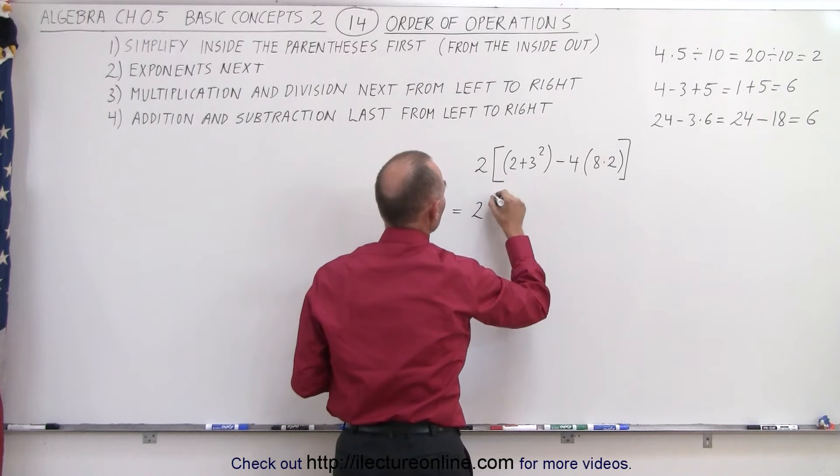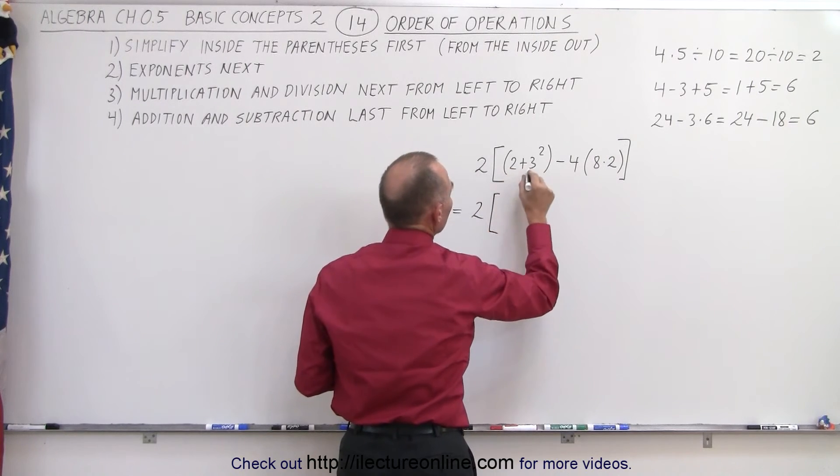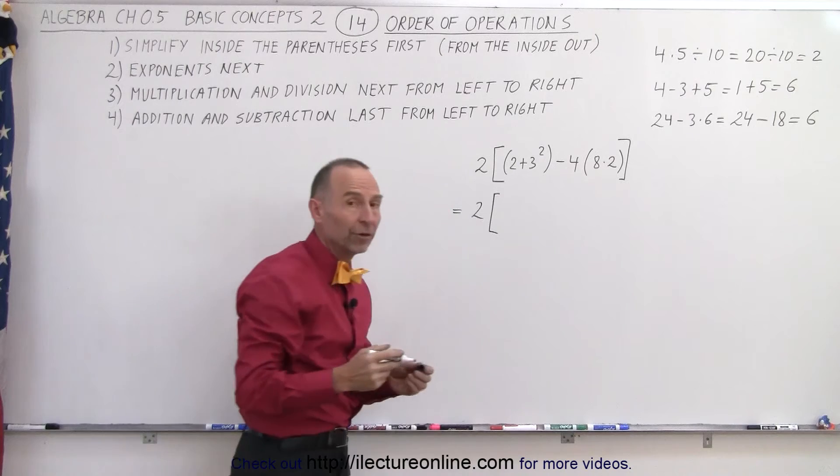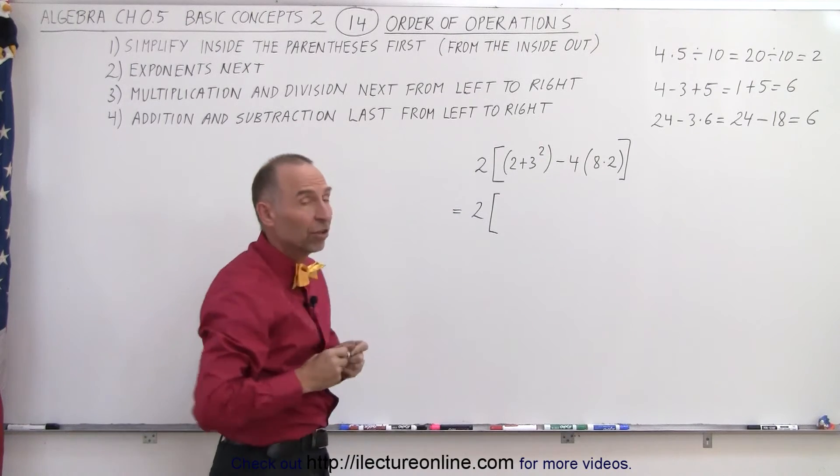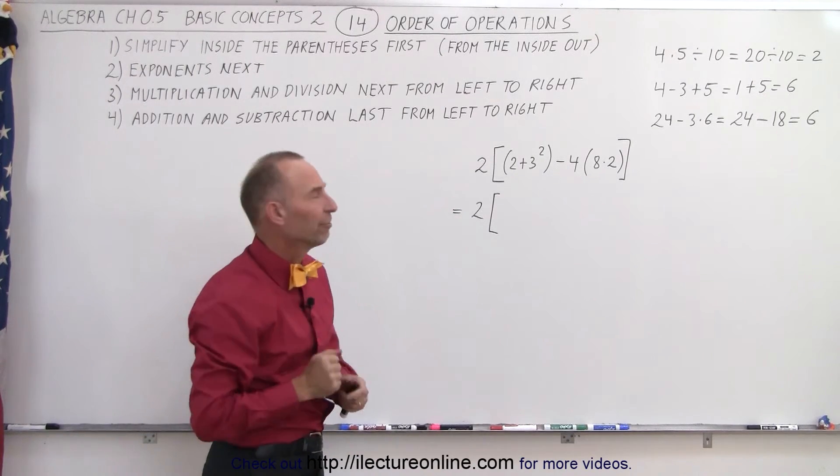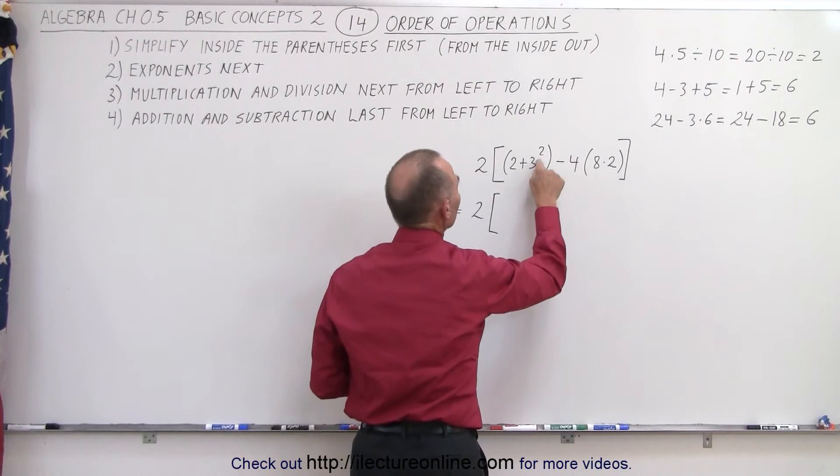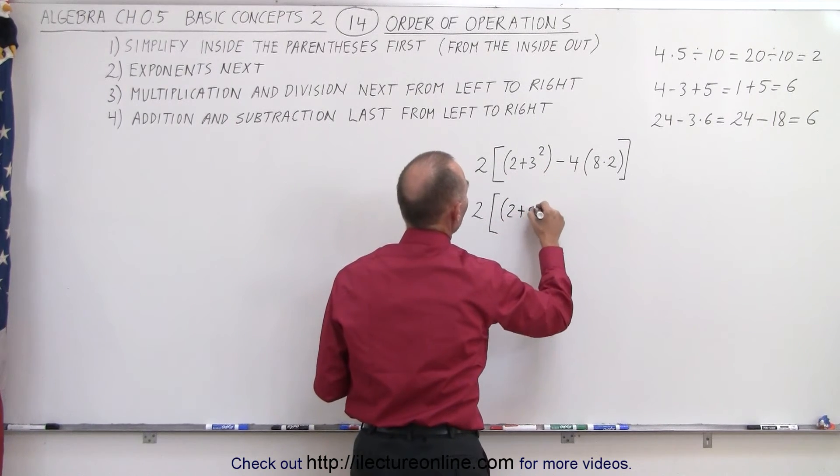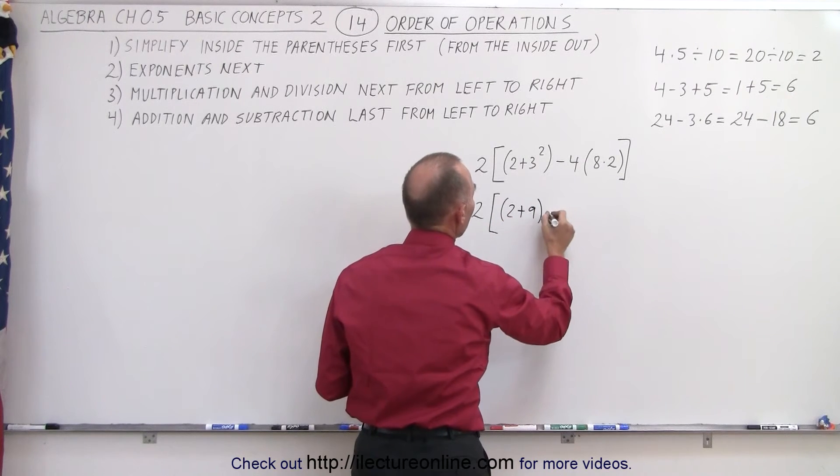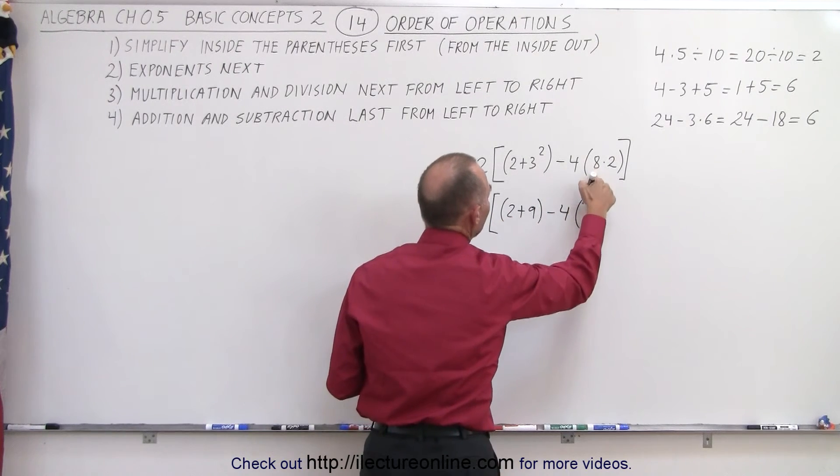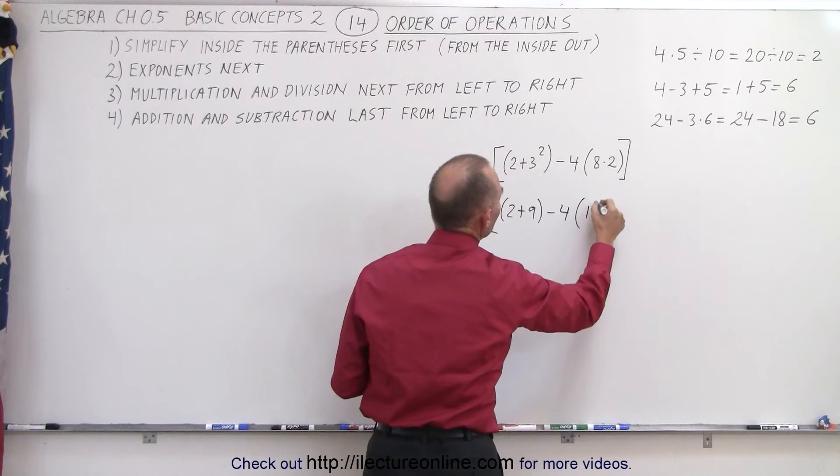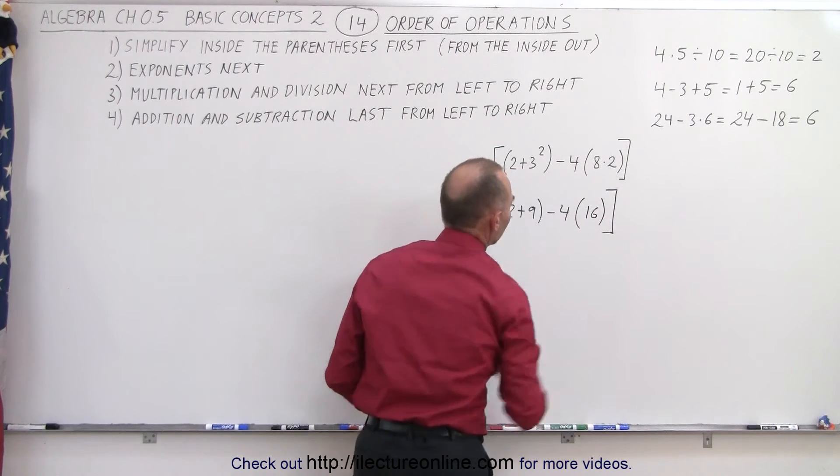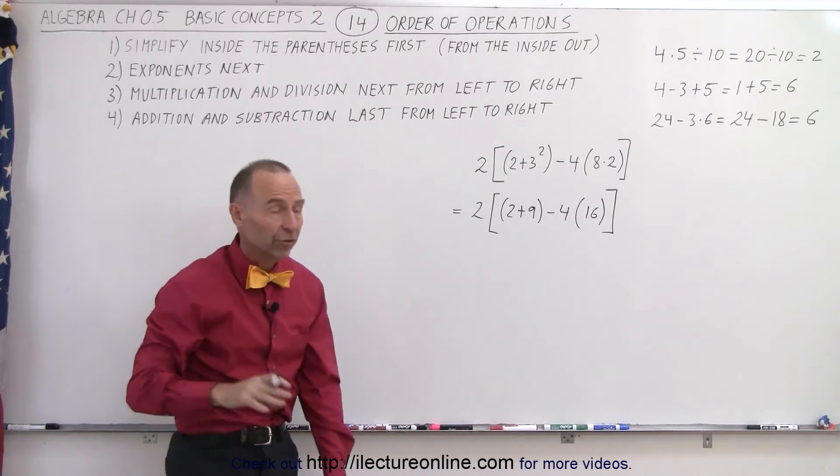So 2 times, so we have 2 plus 3 squared. So inside the parentheses, we have an exponent, and we have an addition. The exponent must come first. So first we take 3 to the second power, which is 9. So we write this as 2 plus 9. We leave everything else the same. Minus 4 times 8 times 2, which is 16. And we have a closing bracket. So that's the first step.